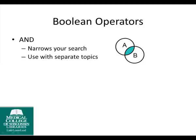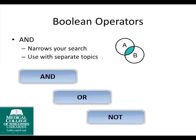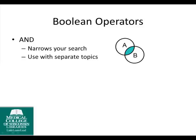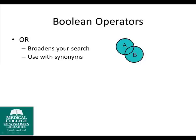Boolean operators are used to connect and define the relationships between your search terms. When searching electronic databases, you can use Boolean operators to either narrow or broaden your search results. The three Boolean operators are AND, OR, and NOT. Most databases require that these terms are entered in capital letters for the database to recognize them as Boolean operators. Use AND to narrow your search by combining together two separate topics. Putting AND between child and head injury asks the database to find articles that contain both of these concepts.